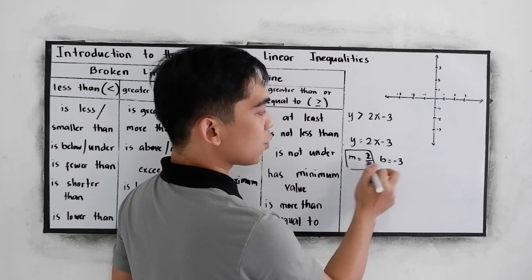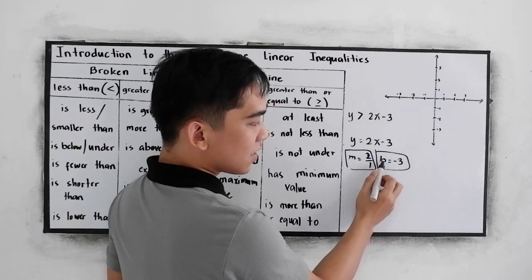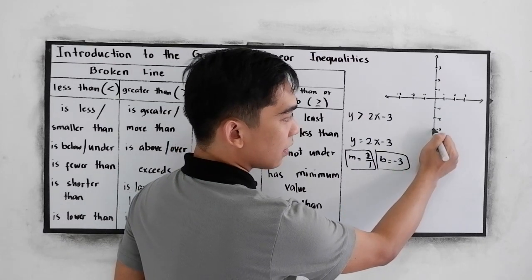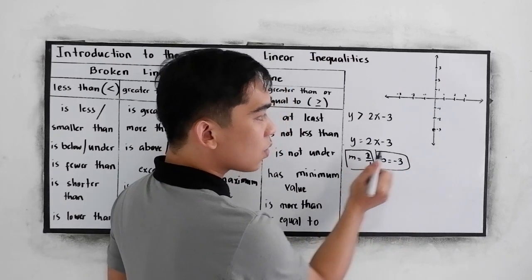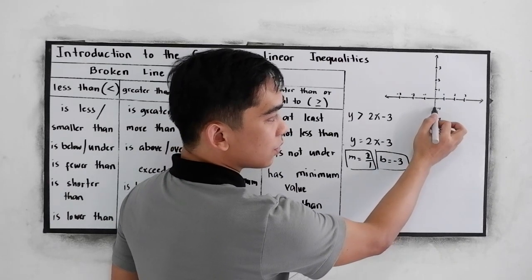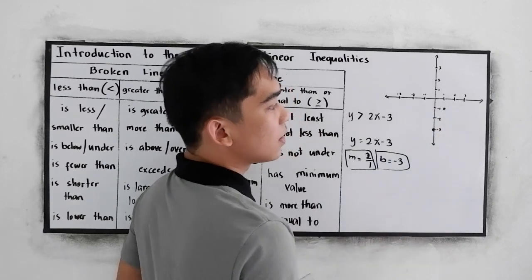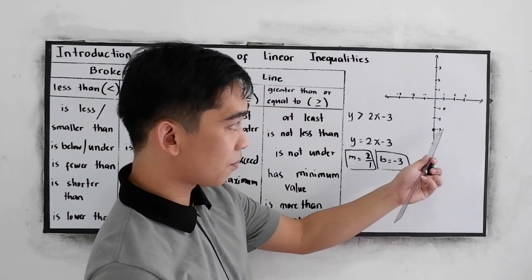Okay. The things we need to know. So, plot negative 3, negative 3. Then, 2 rise, 1, 2. Then, positive going right, 1. Now, connect the point.